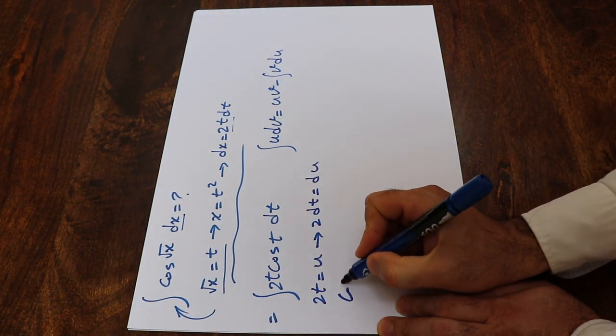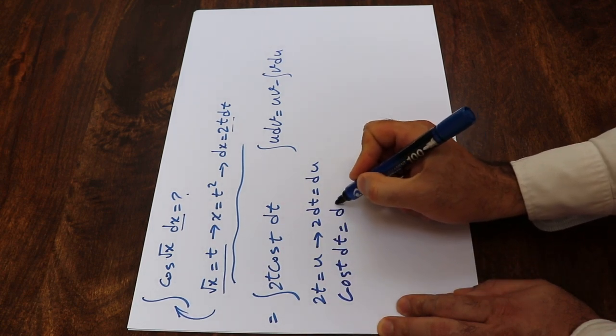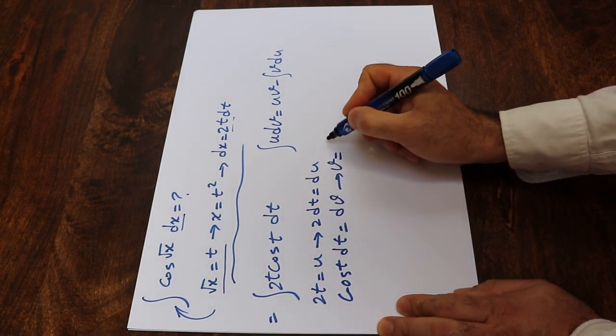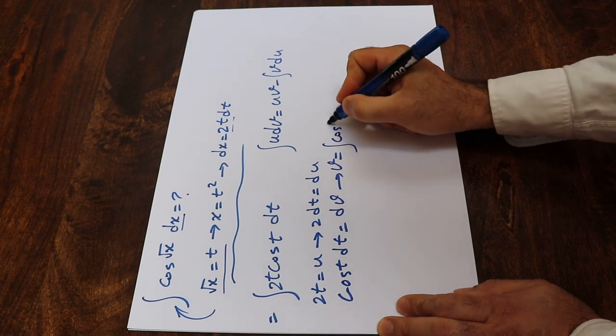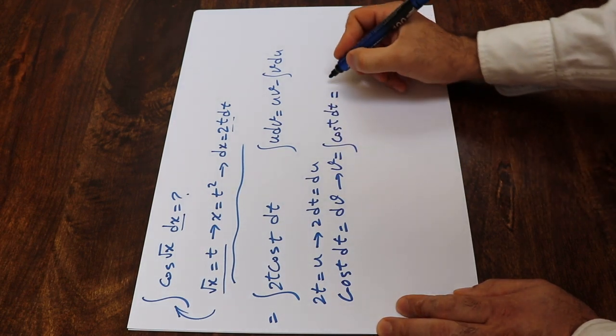And if you define cosine t dt as dv, therefore v will be equal to integral of cosine t dt. And integral of cosine t dt, we know it's equal to sine t.